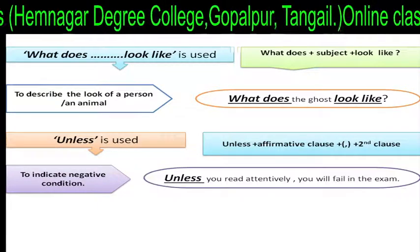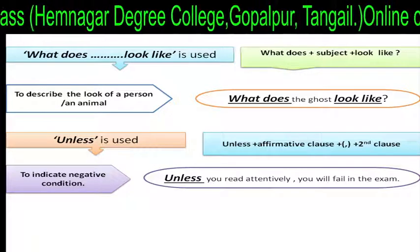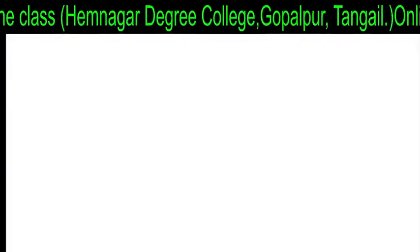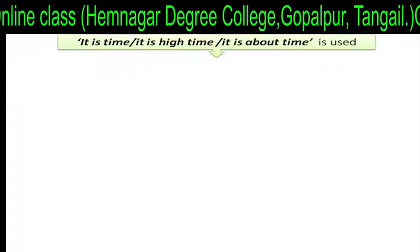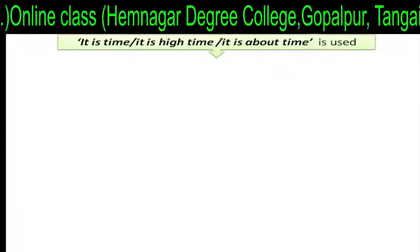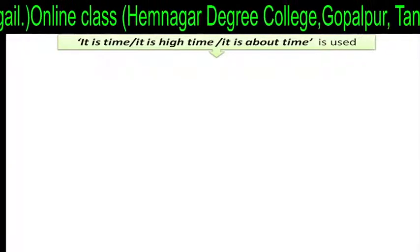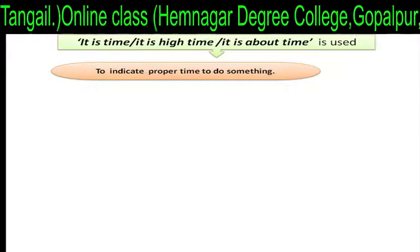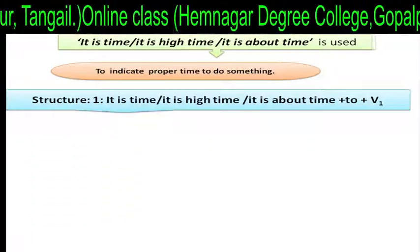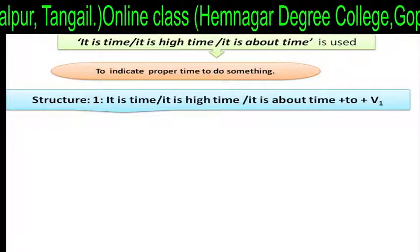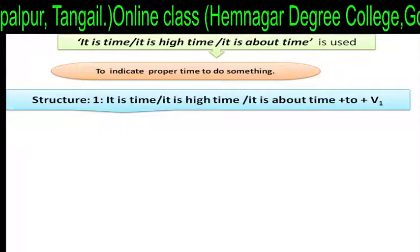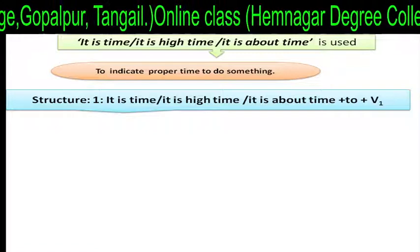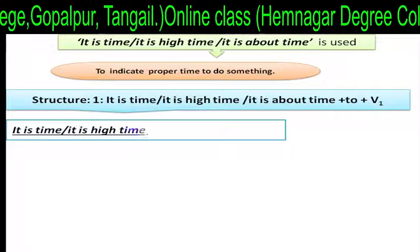Unless is used to indicate a negative condition. Structure: 'unless' plus affirmative clause plus comma plus second clause. For example: 'Unless you read attentively, you will fail in the exam.' It is time, or it is high time, or it is about time is used to indicate the proper time to do something. Structure one: 'It is time' or 'it is high time' or 'it is about time' plus 'to' plus V1.